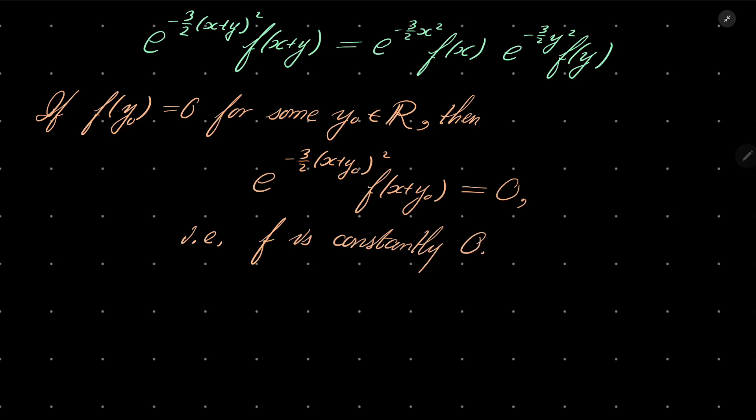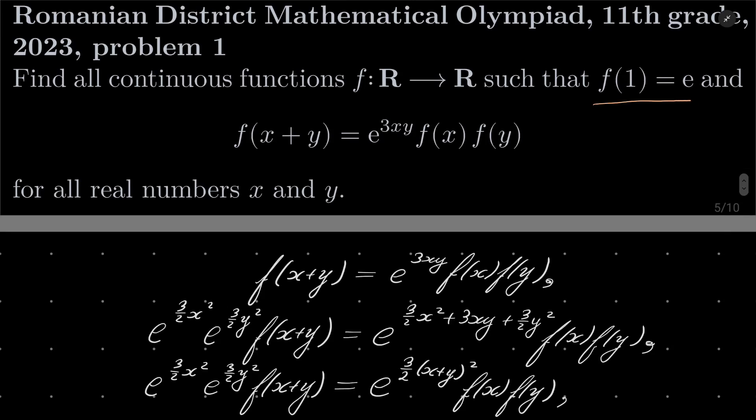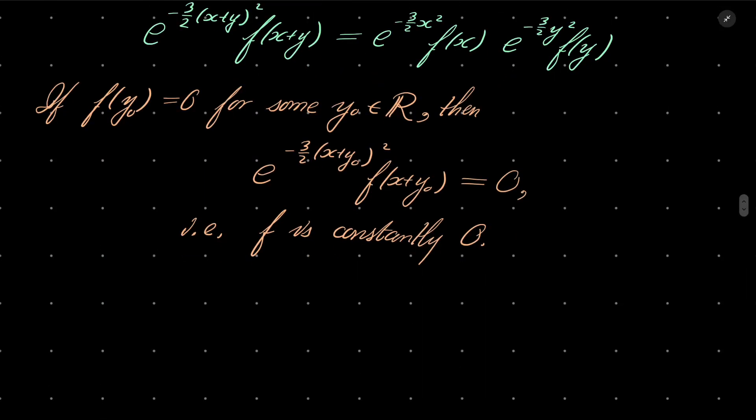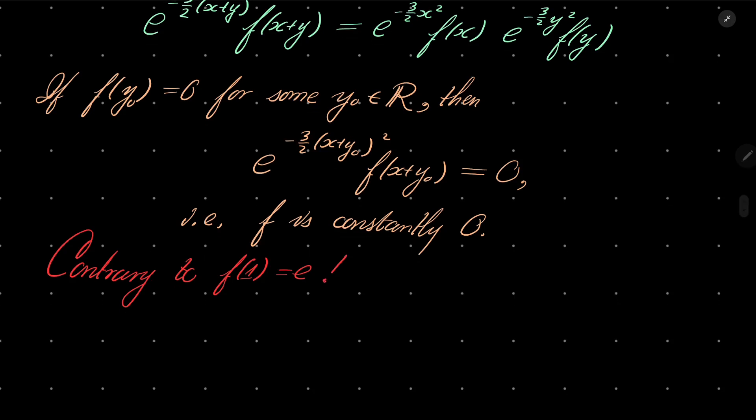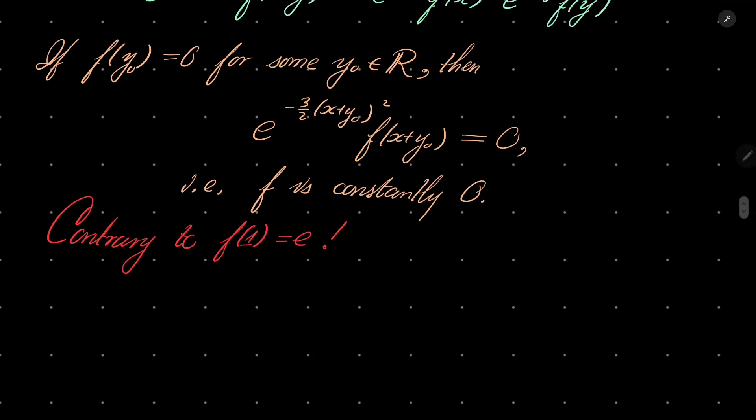Can it be? No, it can't. Why not? Because we are given that f(1) equals e, so it cannot be constantly equal to 0. So it cannot happen. So now we know that f(y) cannot be 0. And now, let's set something. Let's set x and y to be equal.